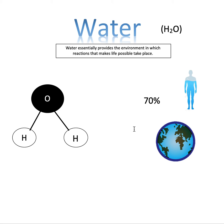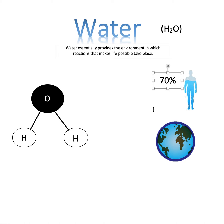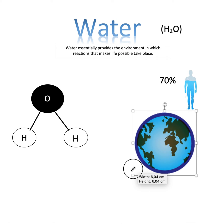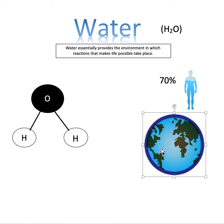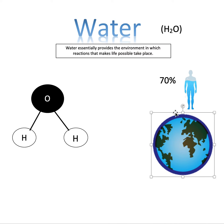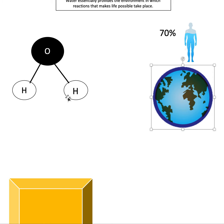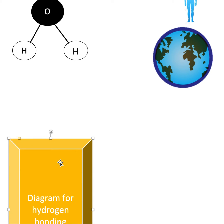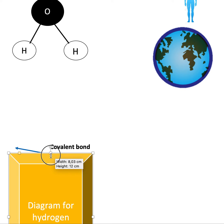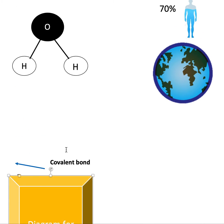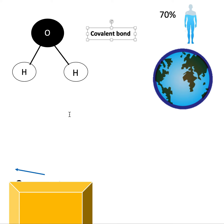Our bodies are 70% water — that's hard to imagine but it's true because of the blood in our body. The earth is also made up of 70% water, so there must be a reason why there is so much. If you can follow this diagram I'm about to label, you'll understand this topic without having to memorize anything.